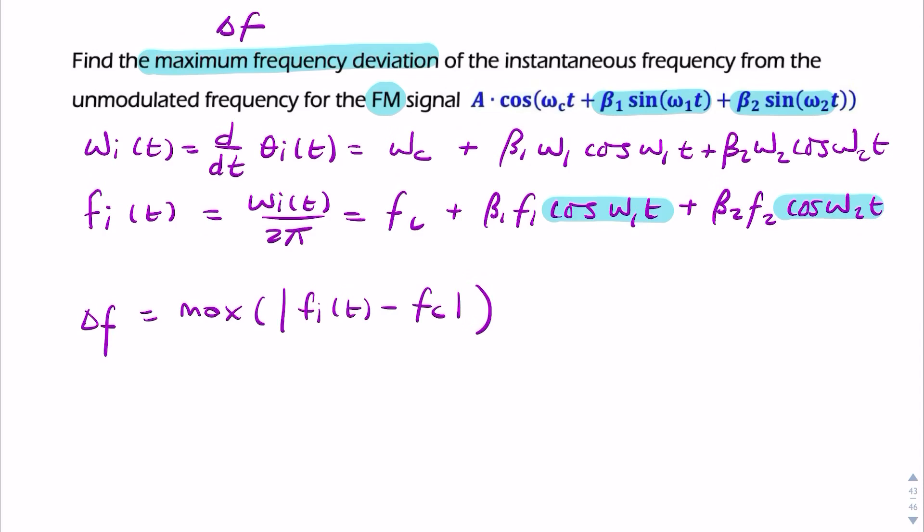So I can now rewrite that as delta f equals, so because I'm subtracting Fc and because these are both 1, I can simply write that as beta 1 f1 plus beta 2 f2. So this is the result that they were after. They said find the maximum frequency deviation delta f and we've done that.